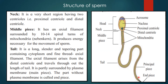The tail is a long, slender, and tapering part containing cytoplasm and a fine thread called the axial filament. The axial filament arises from the distal centriole and travels through the length of the tail. It is partly surrounded by the plasma membrane — that is the main piece. The part without the plasma membrane is called the end piece. So these are the four important parts of the sperm: head, neck, middle piece, and tail.